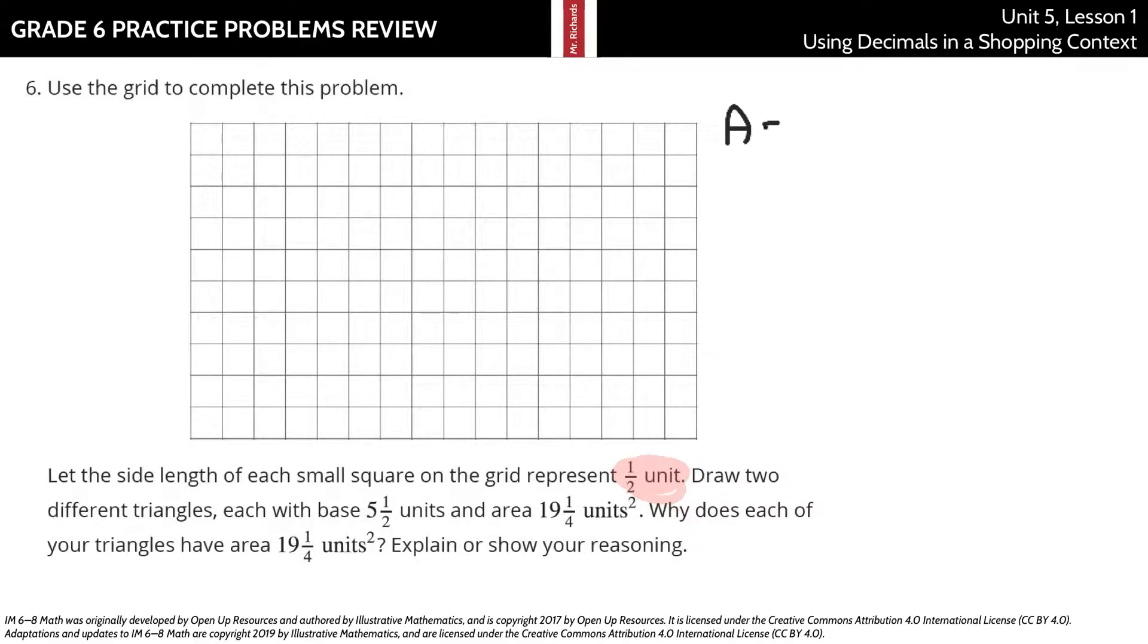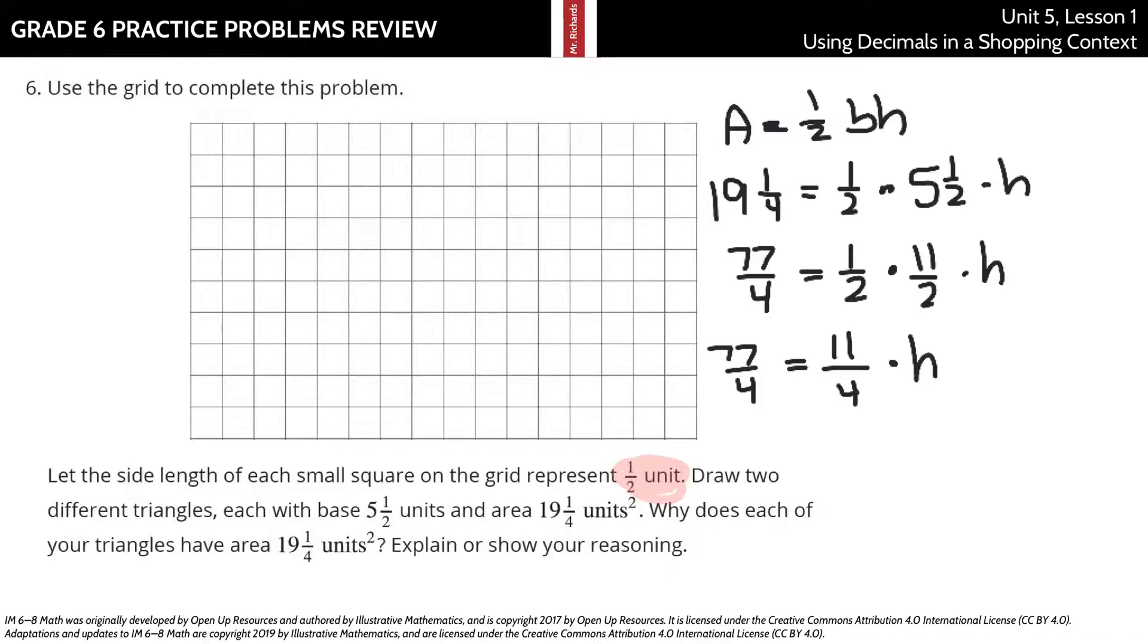One of the first things I want to do here is to figure out what that height is going to be. If we remember our area formula for a triangle, area is equal to 1/2 the base times the height. And so if the area is 19 and 1/4 square units, equals 1/2 times 5 and 1/2 times your height. If I get these as improper fractions now, 19 times 4 is 76 plus the 1 is 77/4 equals 1/2 times 5 times 2 is 10 plus 1 is 11/2 times the height.